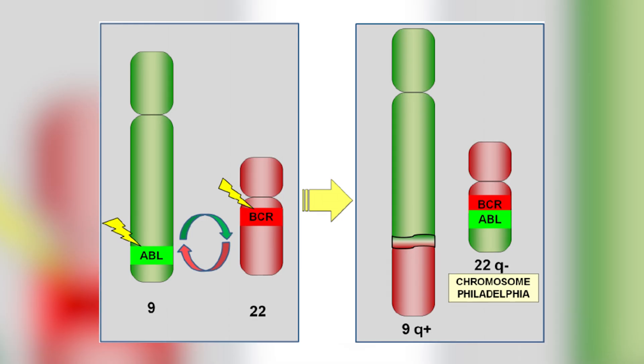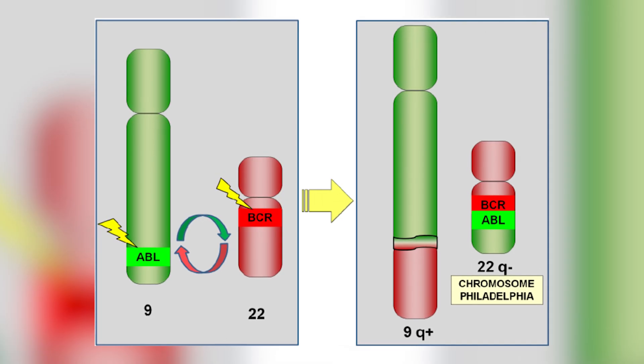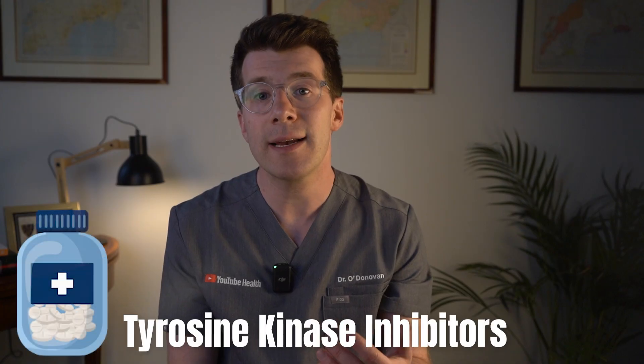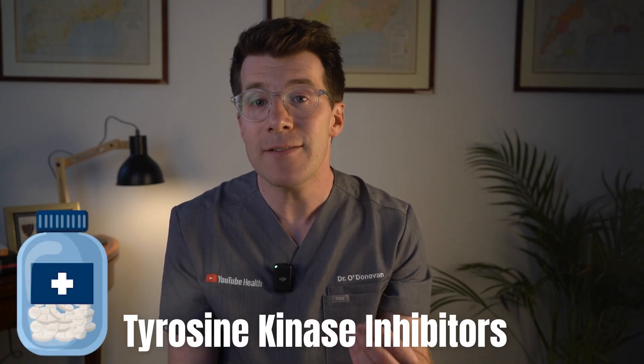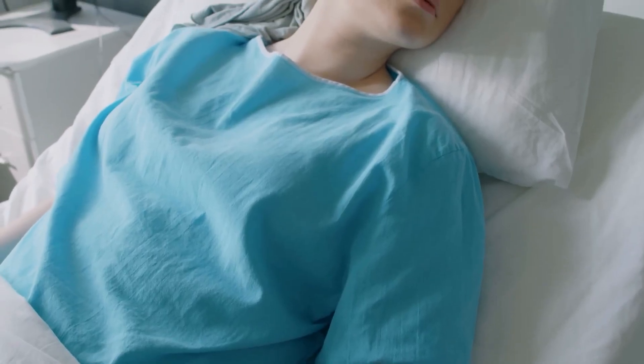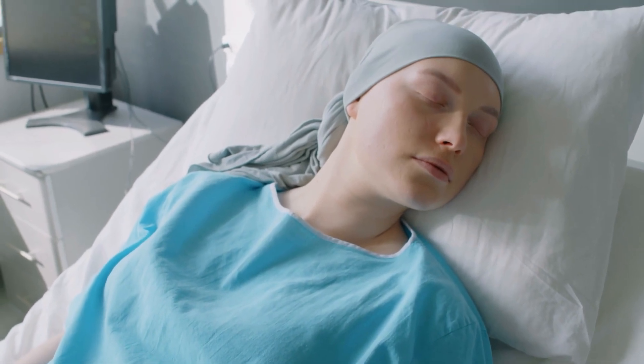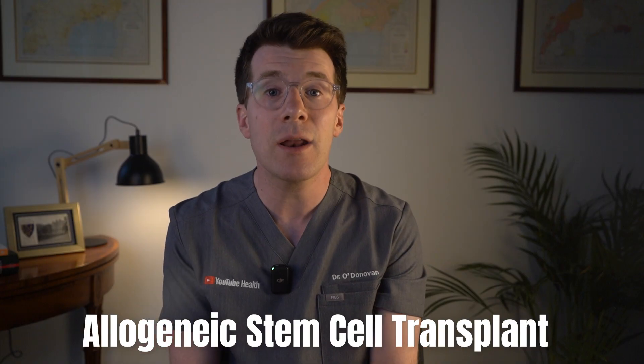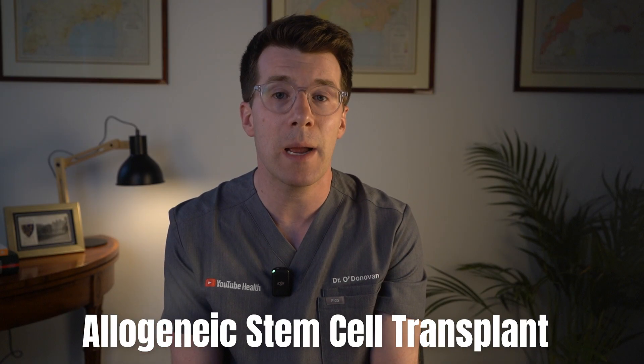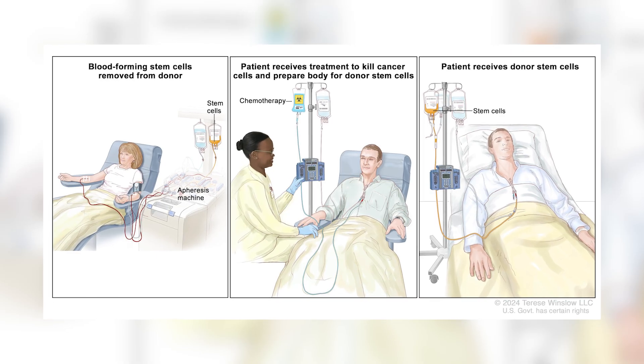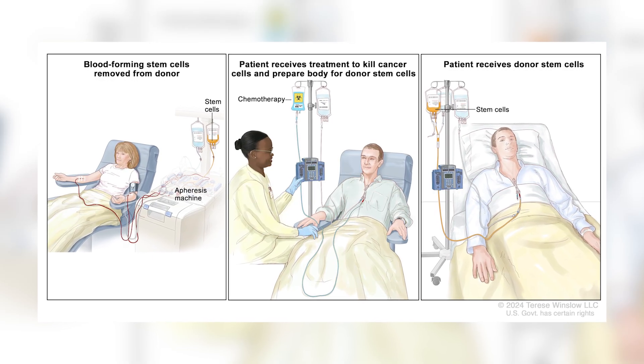Some people may also benefit from targeted therapy, particularly if they have a genetic mutation called the Philadelphia chromosome. Drugs like tyrosine kinase inhibitors block specific signals that help leukaemia cells grow. In some cases, immunotherapy or radiation therapy might be used, especially if the cancer comes back or hasn't responded well to treatment. For those with high-risk or relapsed ALL, an allogeneic stem cell transplant might be recommended, which involves replacing the damaged bone marrow with healthy cells from a donor.